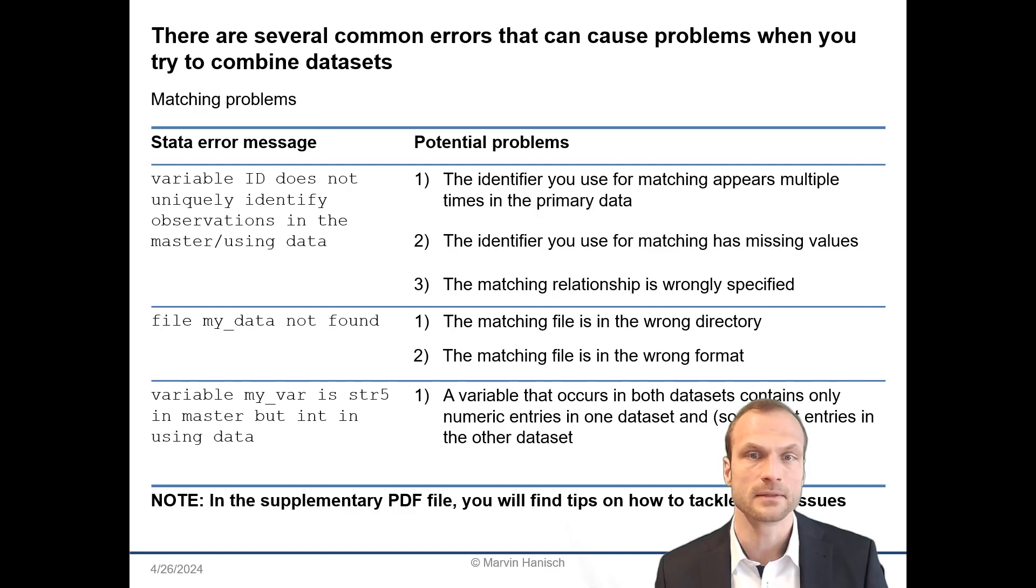There are a few common mistakes that often happen that will produce error messages in Stata. One is that the variable ID does not uniquely identify observations in your dataset. This can occur if the identifier variable appears multiple times in the primary dataset or if it contains missing values.